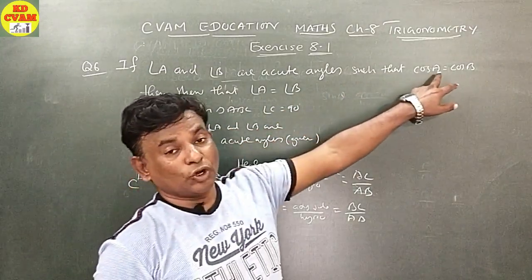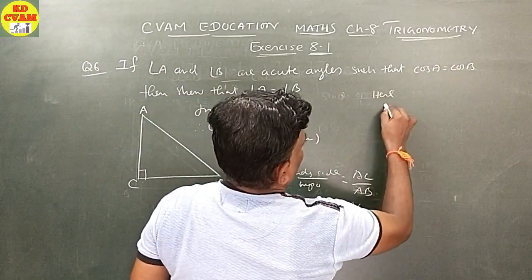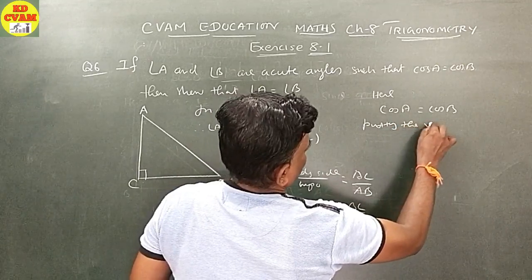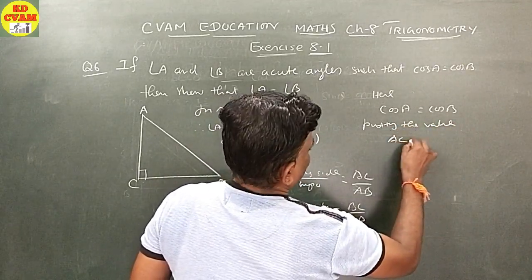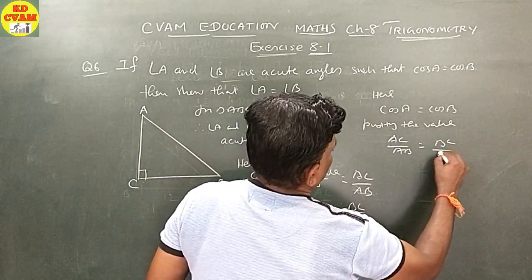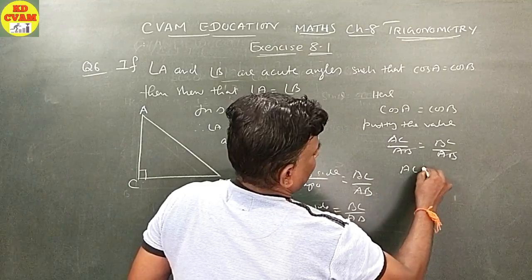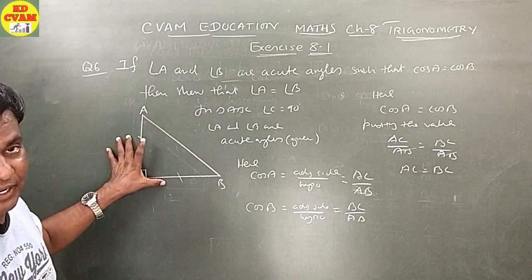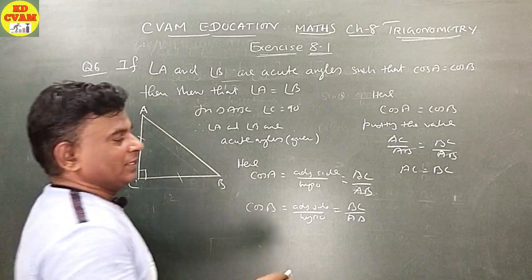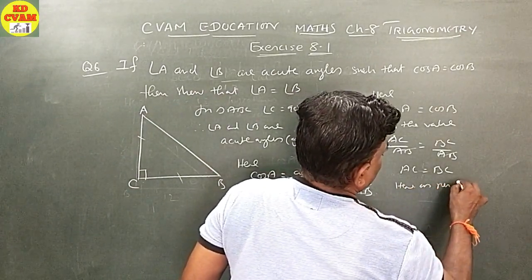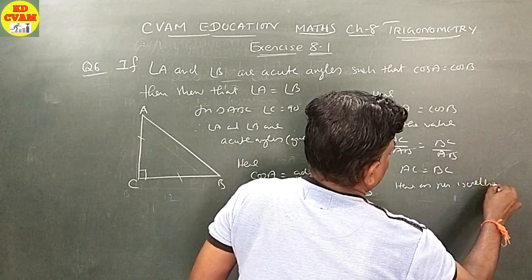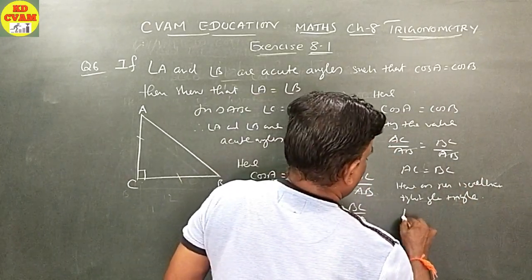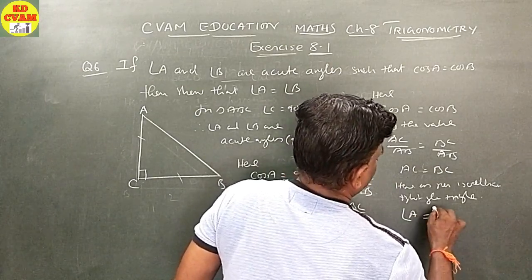Given that cos A equals cos B. Substituting values, AC upon AB equals BC upon AB. AB cancels, giving AC equals BC. As per the isosceles right angle triangle, if AC equals BC, then angle A equals angle B. Proved.